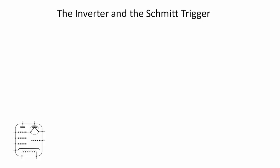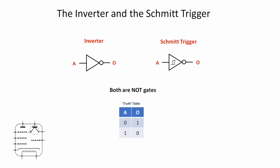Let's start by looking at the gates themselves. The inverter has the symbol thus, and the Schmitt trigger has almost the same symbol except it's got another symbol inside the triangle to identify the fact that it's a Schmitt trigger rather than just an inverter. Now the similarities are that they're both NOT gates. They have the truth table such that if the input is low the output will be high, and if the input is high the output will be low. In that sense they have an identical function.